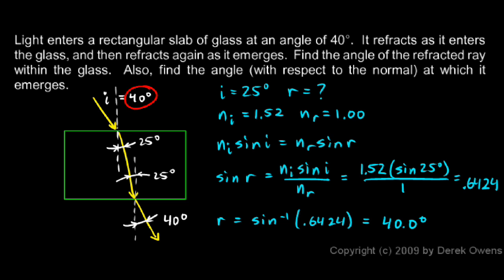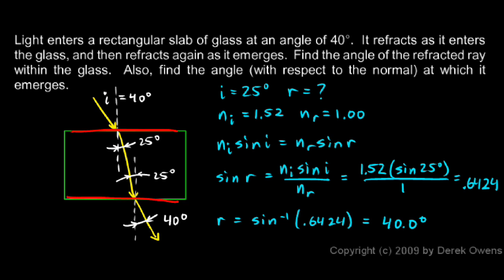Notice that the incident angle going in and the final refracted angle are the same — both 40 degrees. If you didn't get exactly 40.0 degrees, it's because of rounding along the way; more decimal places would bring you closer to exactly 40.0. This is always the case when the surfaces are parallel: the ray refracts by a certain amount entering and refracts back by the same amount exiting. If the surfaces are not parallel, this won't hold.